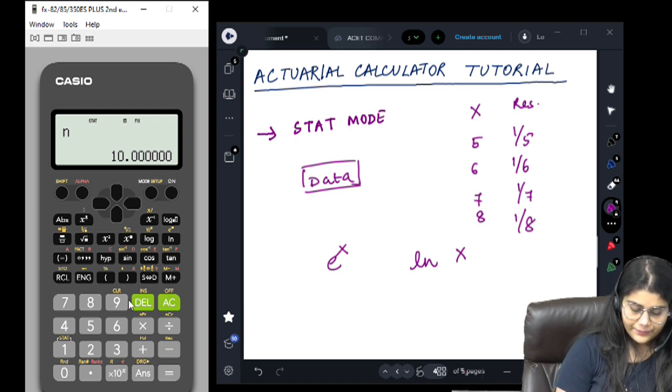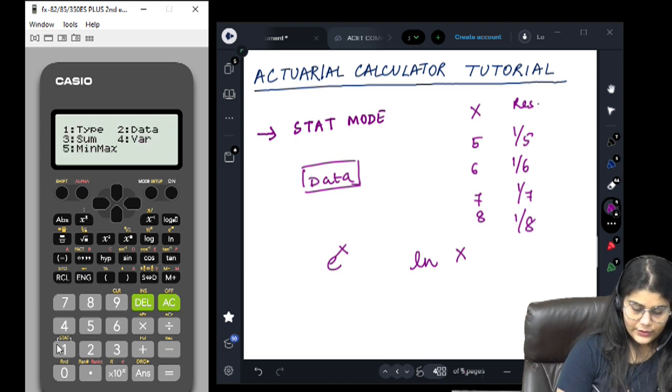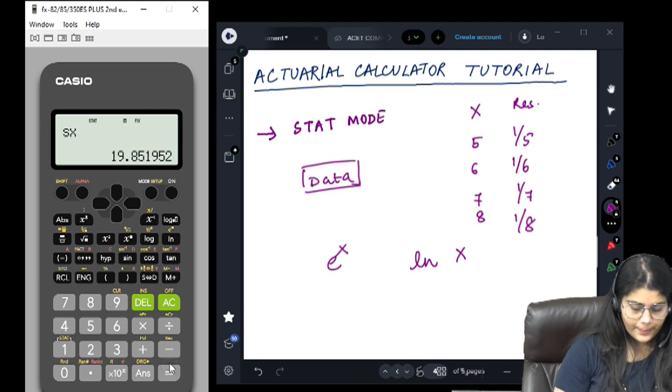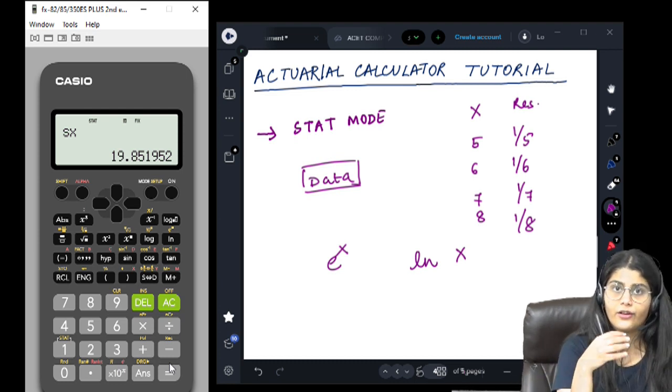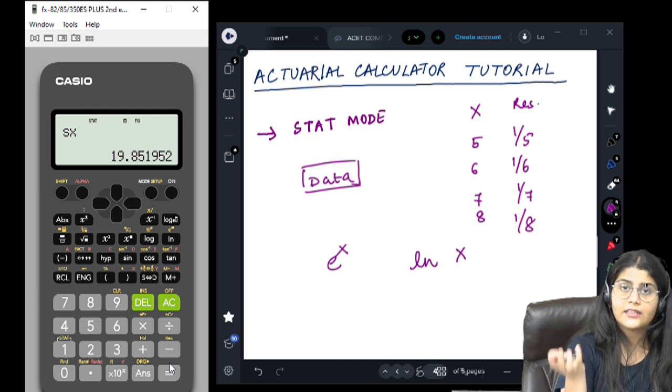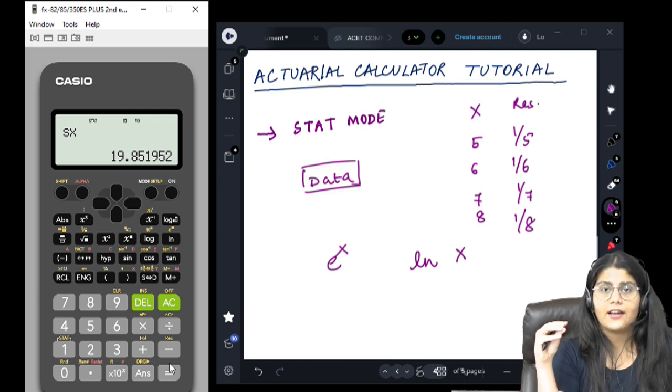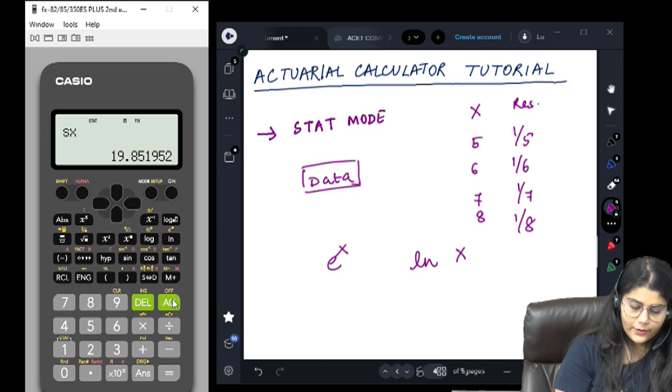Let's look at sample standard deviation. Sample standard deviation is 19.85. So instead of you applying the entire formula, the calculator has calculated the standard deviation for you.